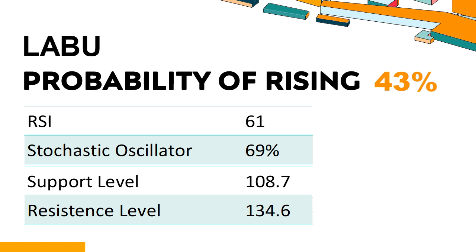Trend Outlook: LABU has a 43% probability of rising stock price. When the probability of rising is lower than 50%, the probability of falling is relatively high. Combining multiple technical analysis indicators, LABU has five bullish signals and two bearish signals. LABU's short-term support level is 113.8; if it falls below 113.8, it will have a chance to test 108.7. LABU's short-term resistance level is 127.6; if it breaks through 127.6, it will look up to 134.6.